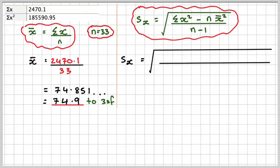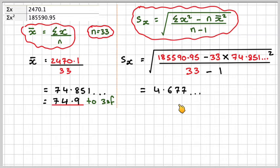we have 185,590.95 minus 33 times our answer here. Don't use the rounded value. Use the original value, 74.851 squared. Use the answer function on your calculator, divided by 33 minus 1. Taking the square root of all that gives 4.677, which is 4.68 to 3 significant figures. Now we can use this to identify any outliers in the 33 pieces of data.